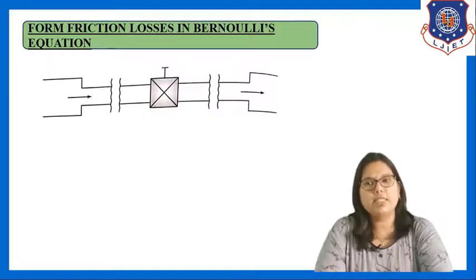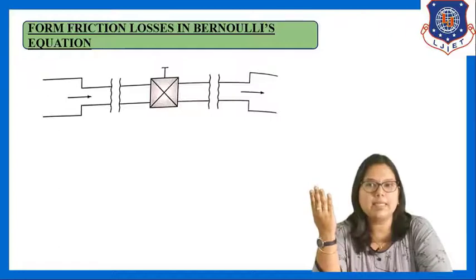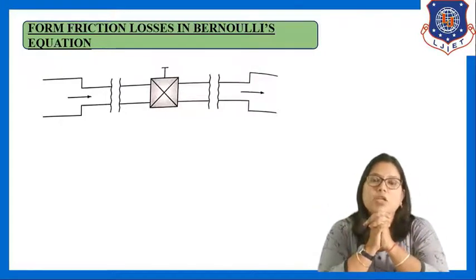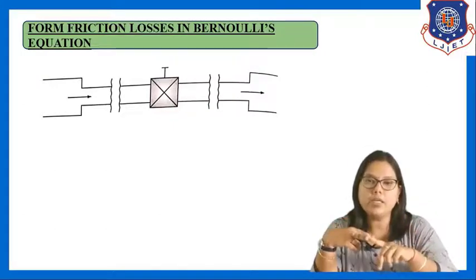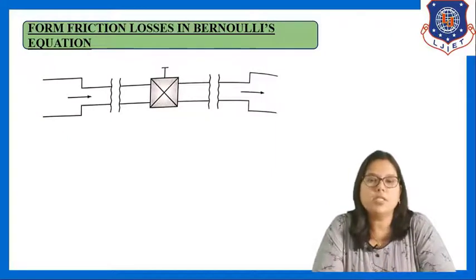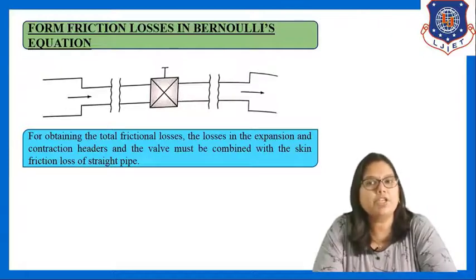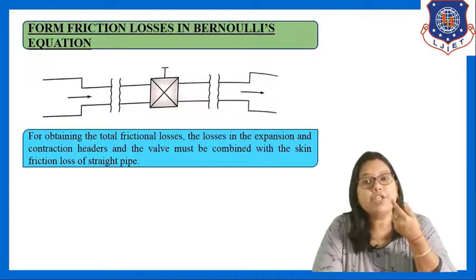Now let us look at foam friction losses in a Bernoulli situation. In the figure, one side has sudden contraction in area, the other side has sudden expansion, and in the middle part fittings are used. For obtaining total frictional losses, losses in the expansion, contraction, headers, and valves must be combined with skin friction loss from the straight pipe. Total friction loss includes skin friction as well as foam friction due to sudden expansion, sudden contraction, and due to valves and fittings.